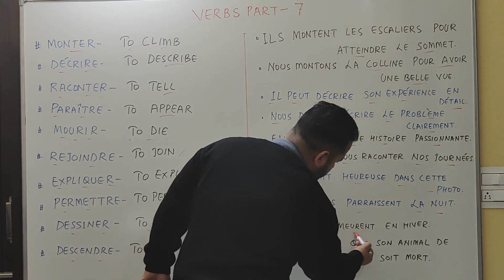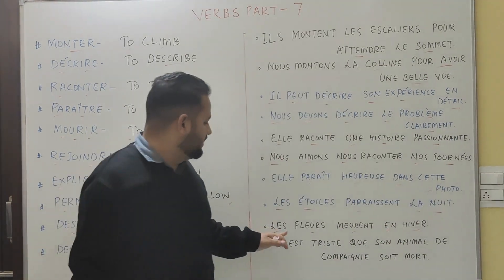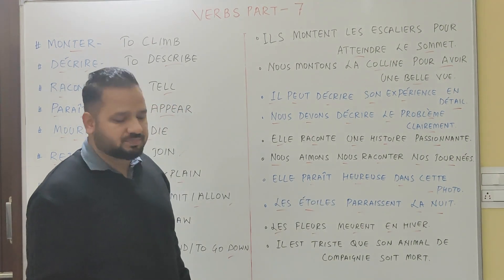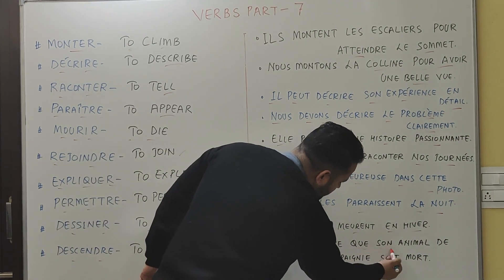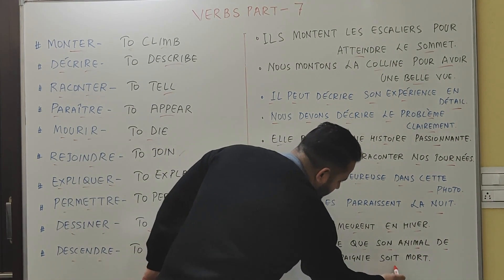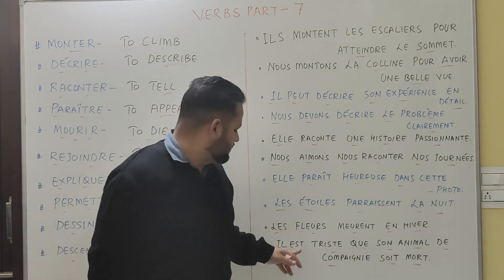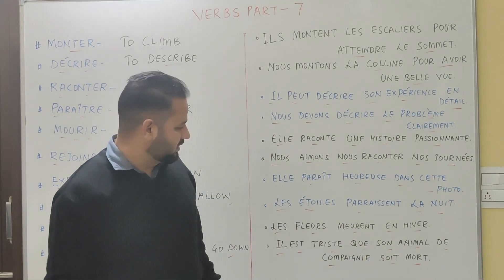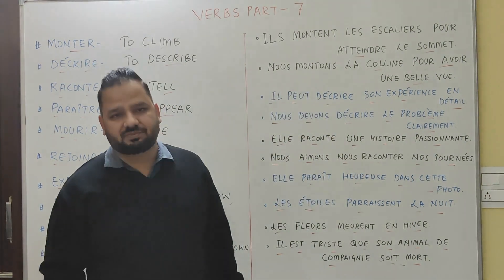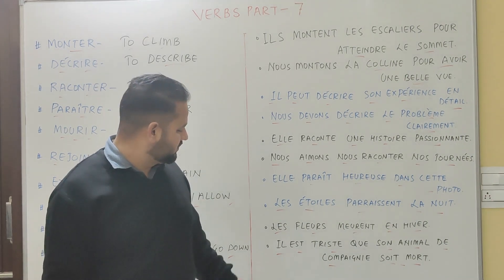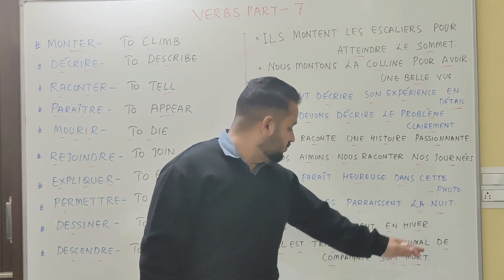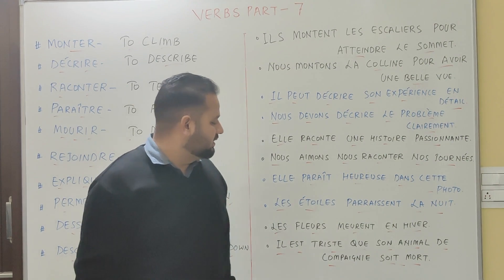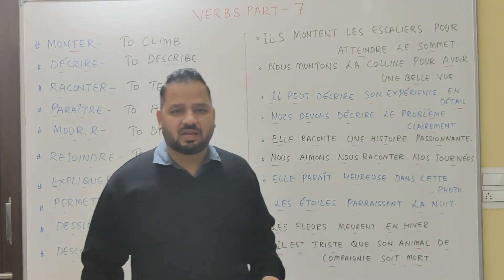For 'mourir' - to die: 'Les fleurs meurent en hiver.' - Flowers die in winter. One more example: he is sad that his pet died. Note this uses the subjunctive, which we will cover in our upcoming videos. I hope these words are clear.